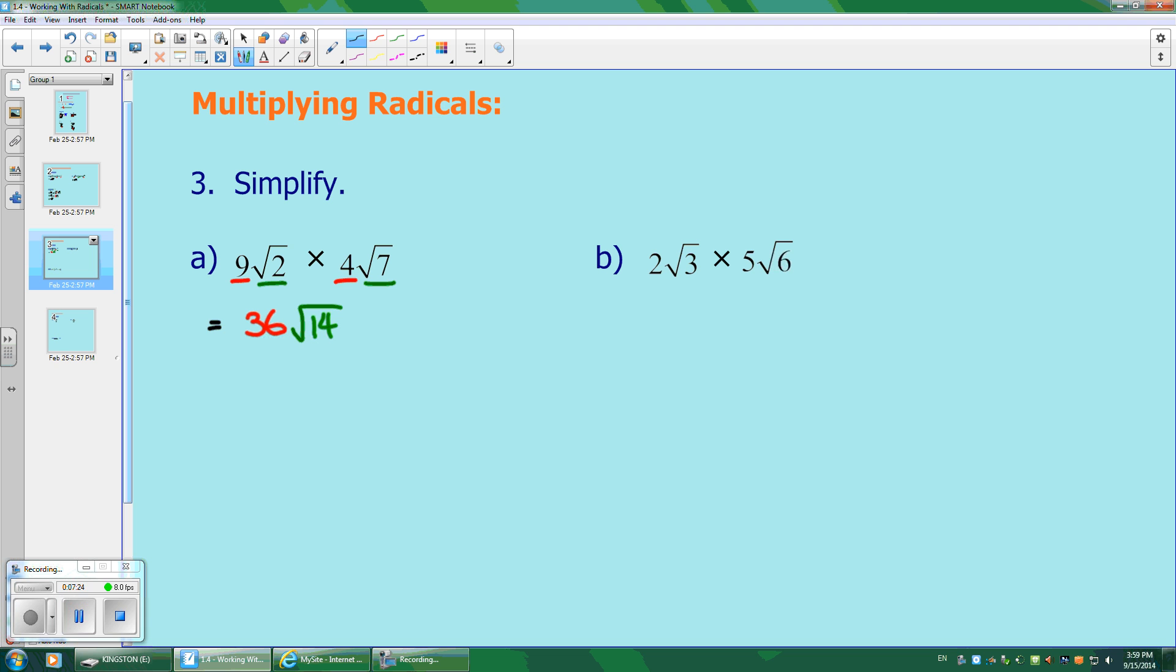We're going to go on to b now. Let's try it again. 2 times 5 gives you the 10. And then root 3 times root 6 gives you root 18. And this would be the final answer if the root 18 doesn't break down further. But in this case, it actually does. I have my 10. And the root 18 can be broken down into 9, which is a perfect square, and 2. Don't forget the roots.